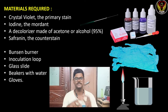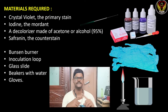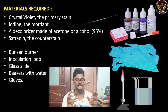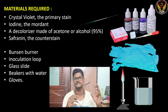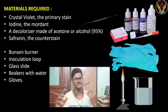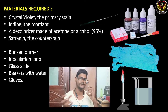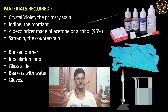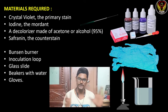The important materials required for this technique are four key reagents: crystal violet (our primary stain), iodine (called the mordant), a decolorizer made of acetone or 95% alcohol, and safranin (the counter stain or secondary stain). Apart from these four reagents, we need a Bunsen burner, inoculation loop, glass slides, beakers with water, and gloves to prevent staining our hands.